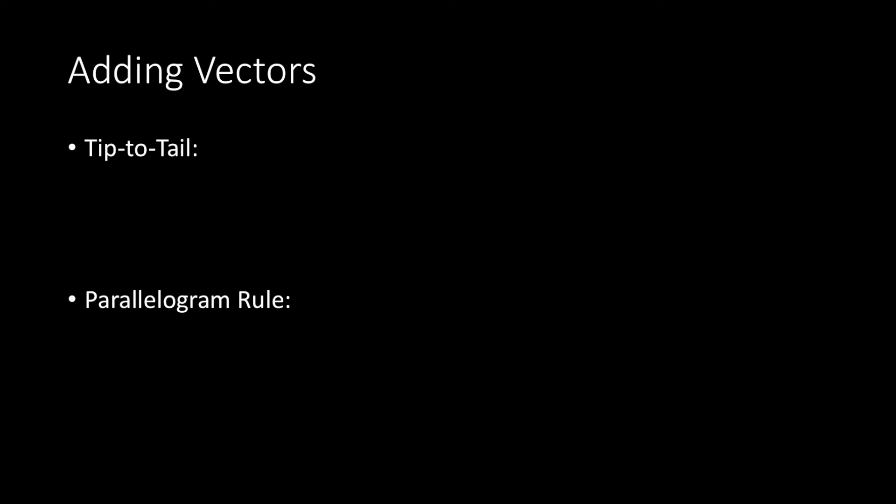Now let us look at the vector operation of addition. When two or more vectors are added, the resulting vector is aptly named the resultant. We will begin with the graphical representation of this operation. There are two ways of visualizing this.